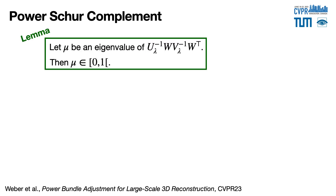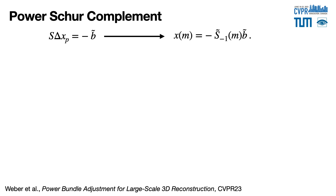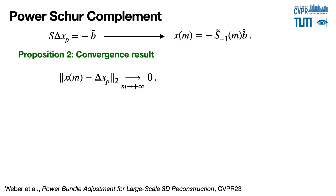As we want to use the first proposition, we prove that all eigenvalues of the corresponding matrix are smaller than 1. A proof is provided in our paper. We can then apply the first proposition to get S̃, an approximation at order M of the inverse Schur complement. From the reduced camera system, we can get an approximation X_M of the unknown pose updates. This leads to our second theoretical result concerning the convergence of this approximation to the exact pose updates as order M increases.